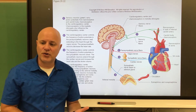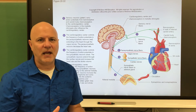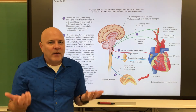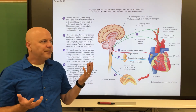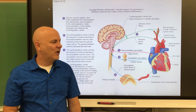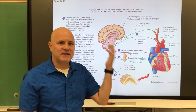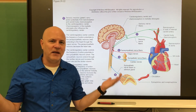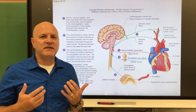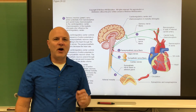The sympathetic division branches to the SA and AV nodes and secretes norepinephrine, increasing both the force and rate of contraction. For example, if a bear walks in, your heart rate increases due to the fight-or-flight response. Once you realize it's just your friend Steve in a bear costume, your parasympathetic division brings your heart rate back down to normal.